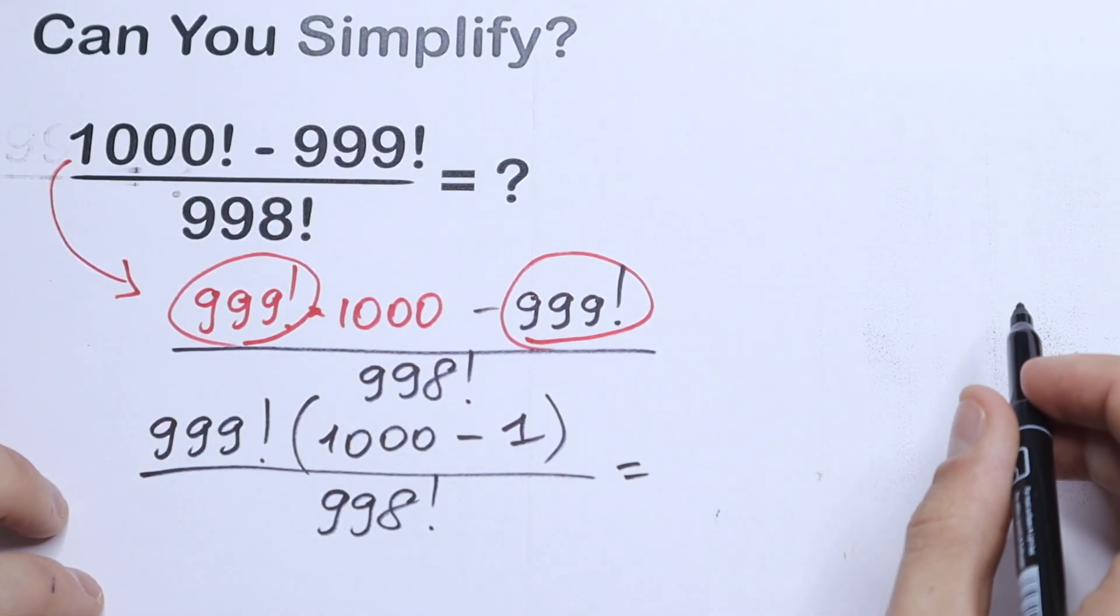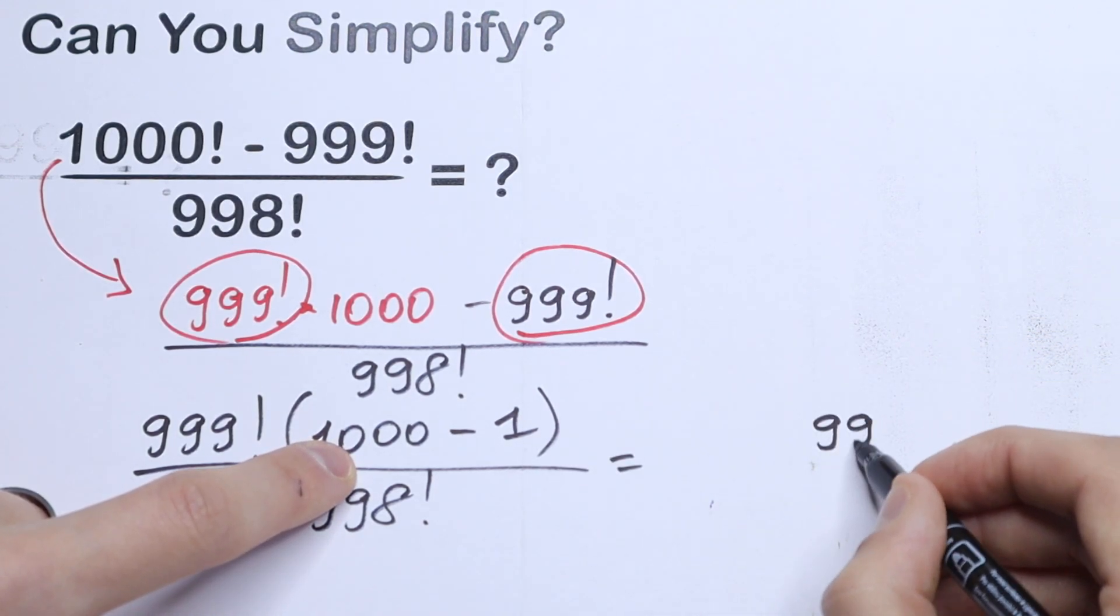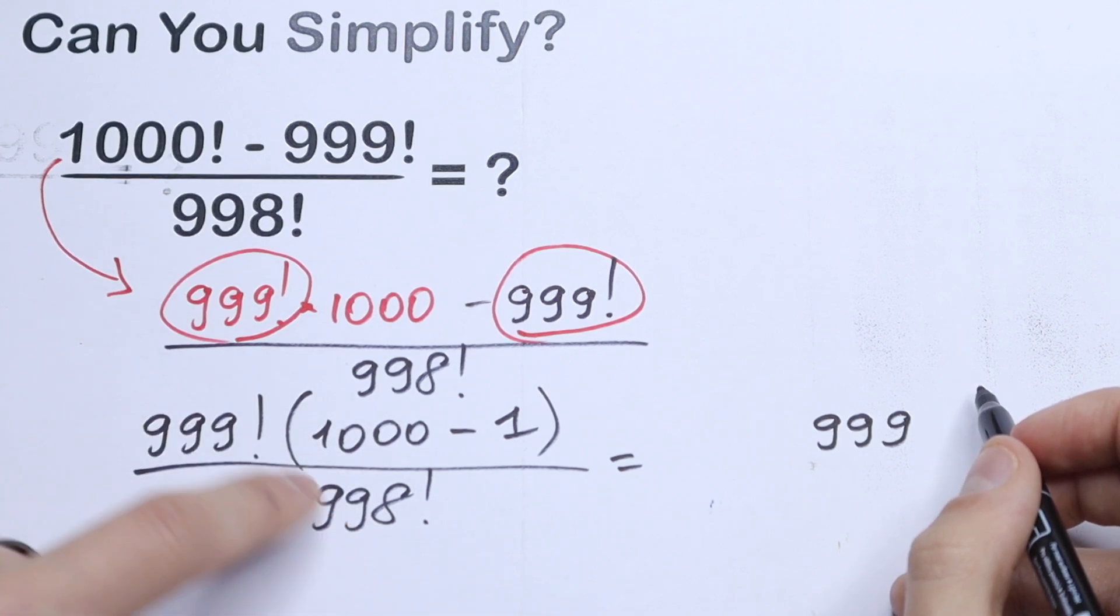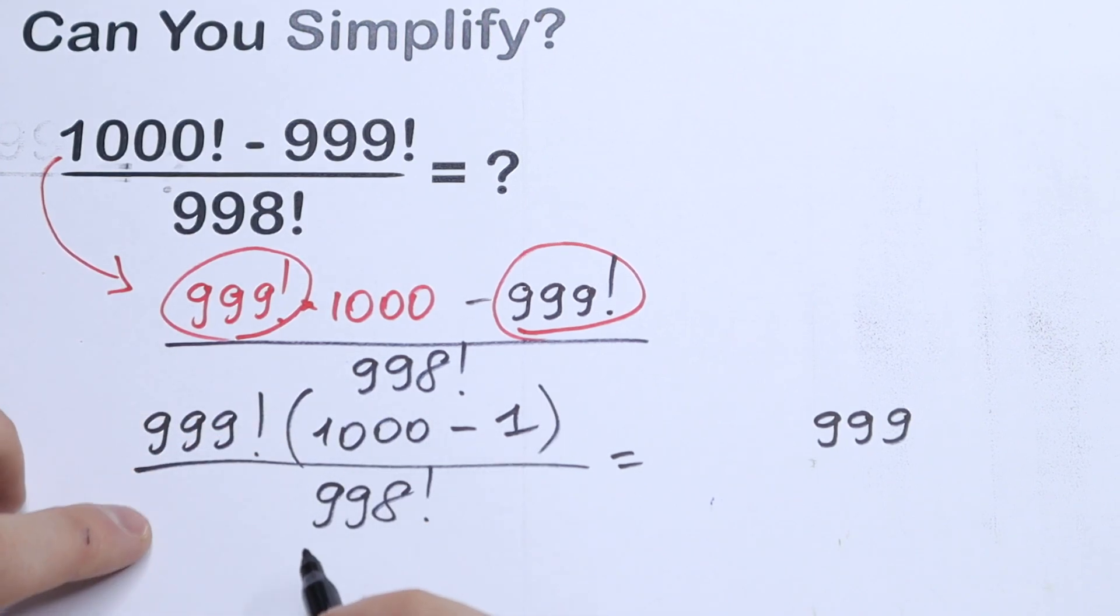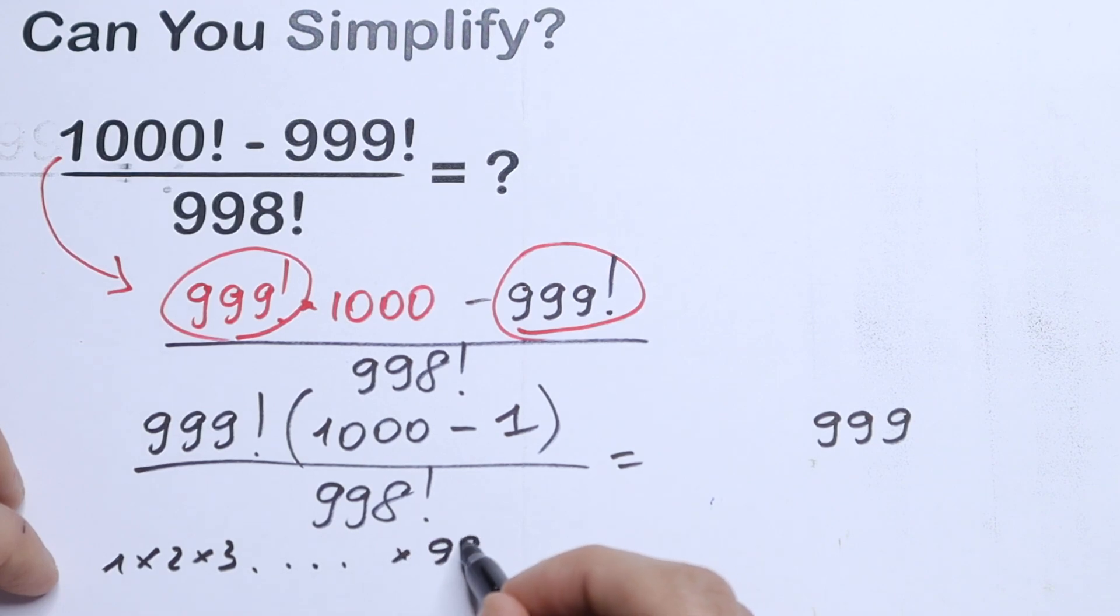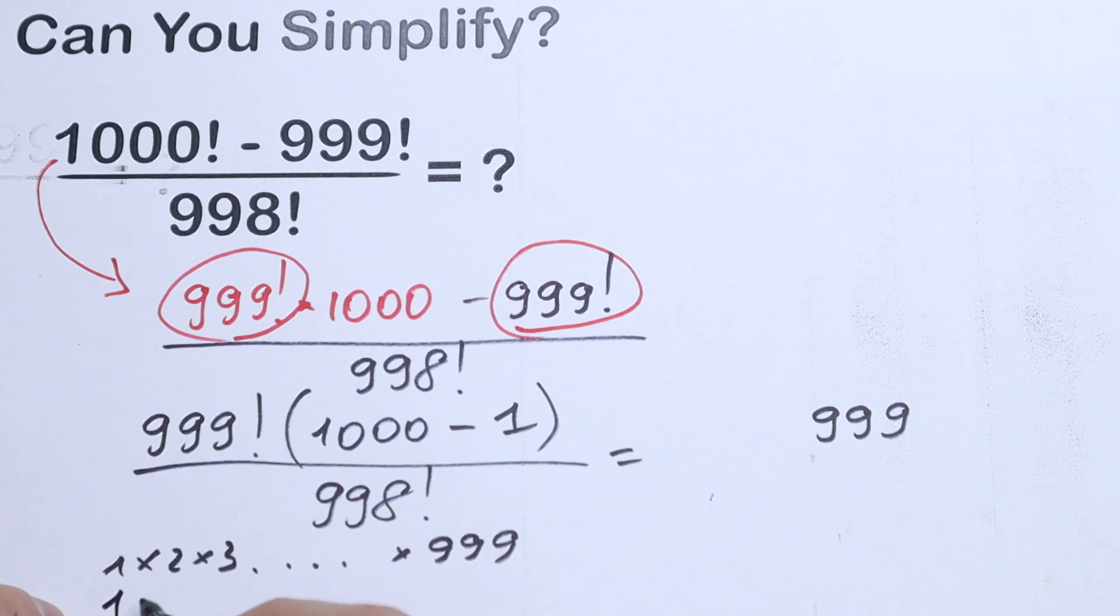As a result, as you can see, we will have right here 999 in our parentheses. And what we can do with these factorials? Right here we have a product until 999: 1 times 2 times 3 times 999. And right here we will have the same product but until 998: 1 times 2 times 3 times 998.